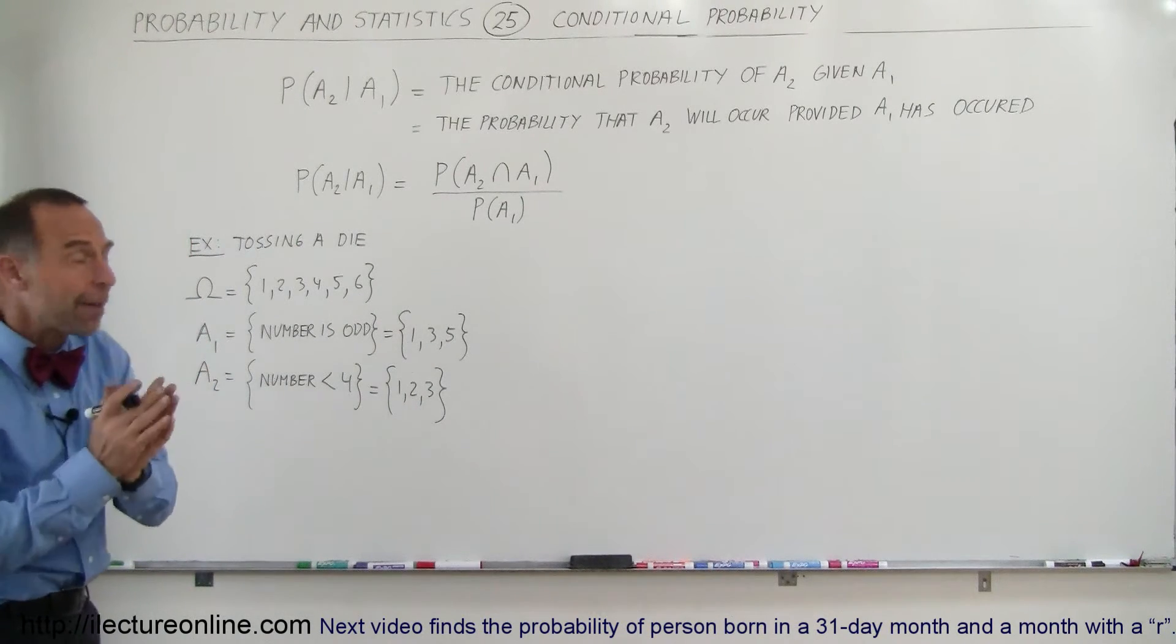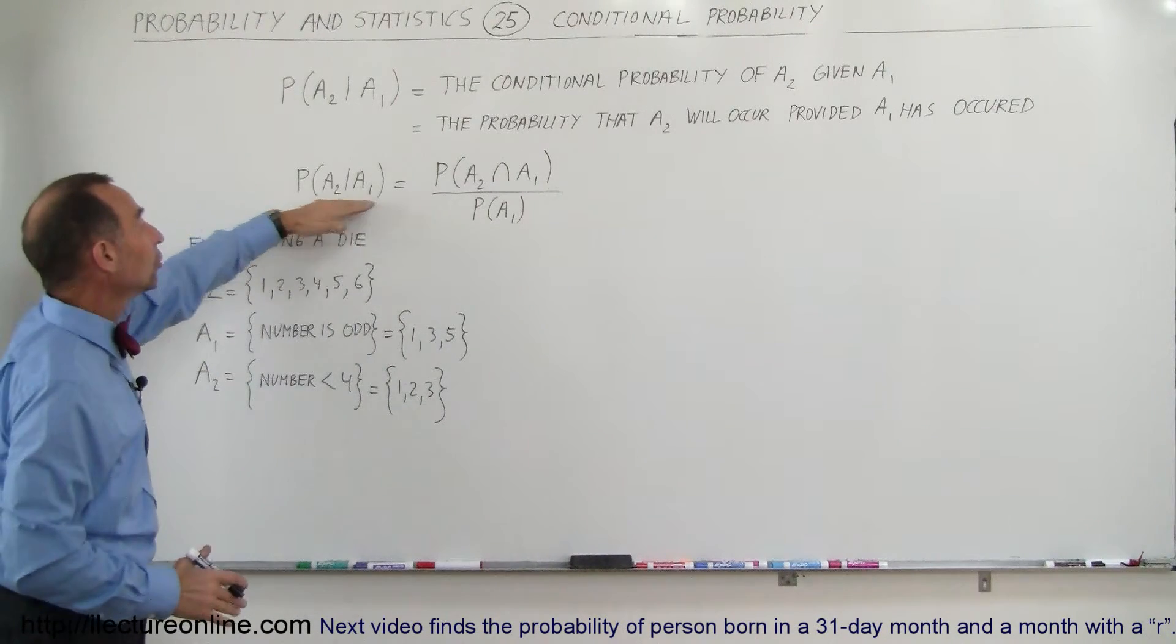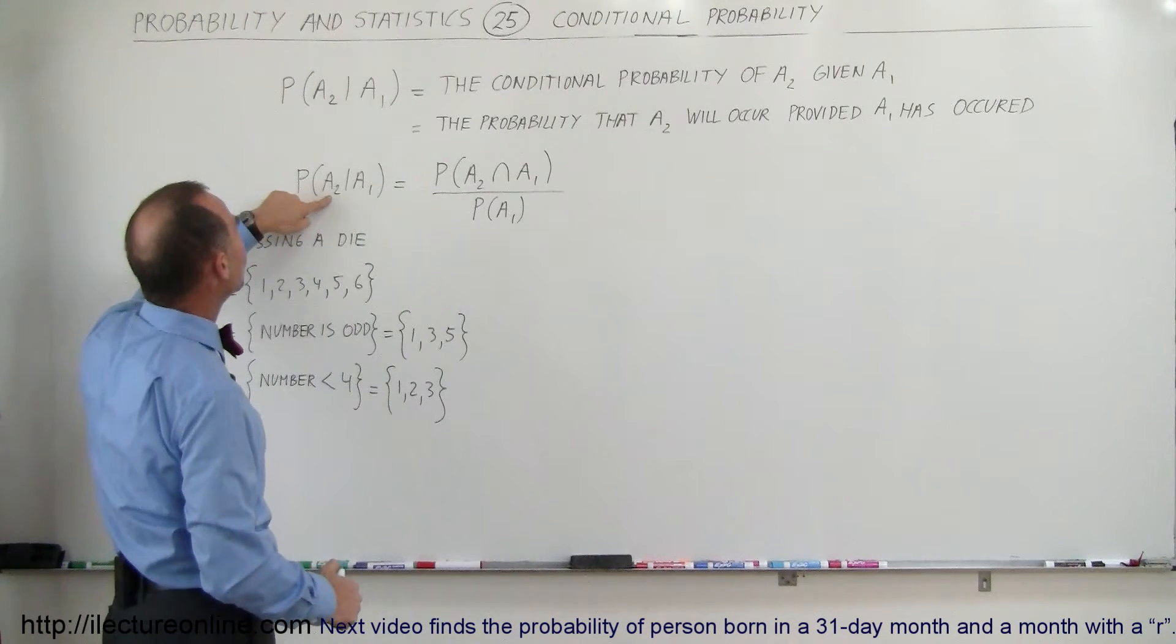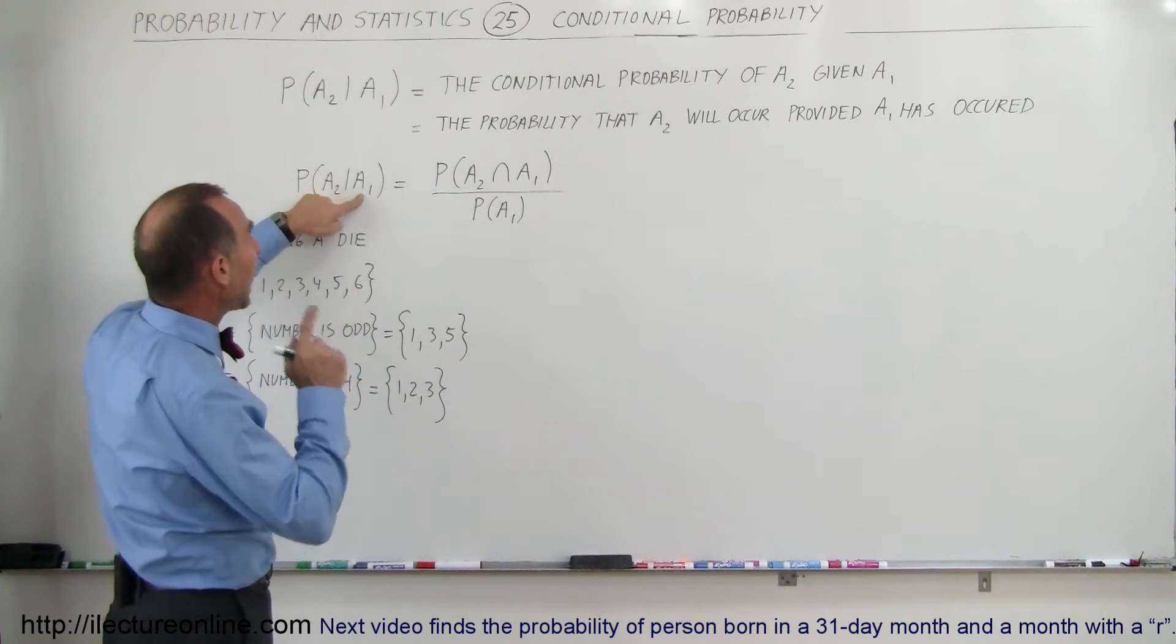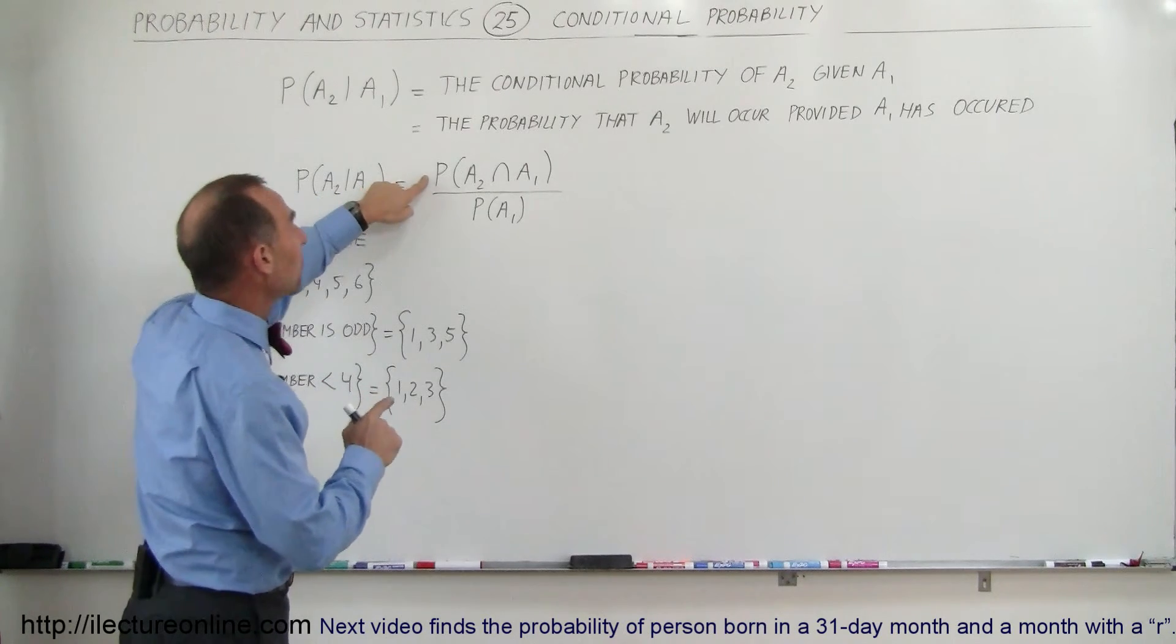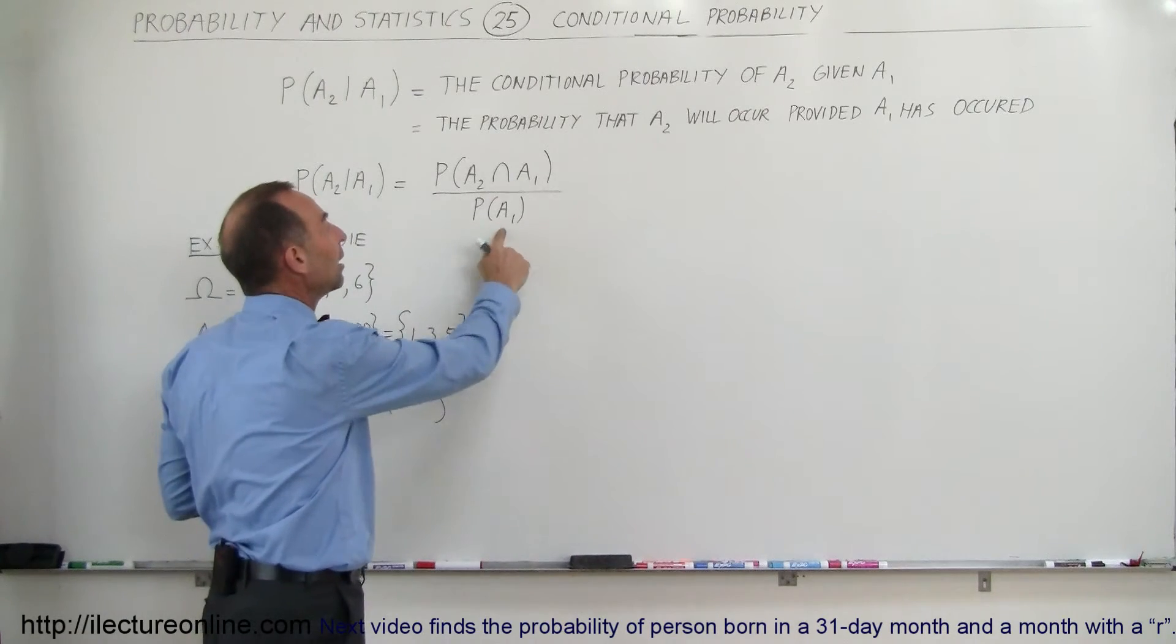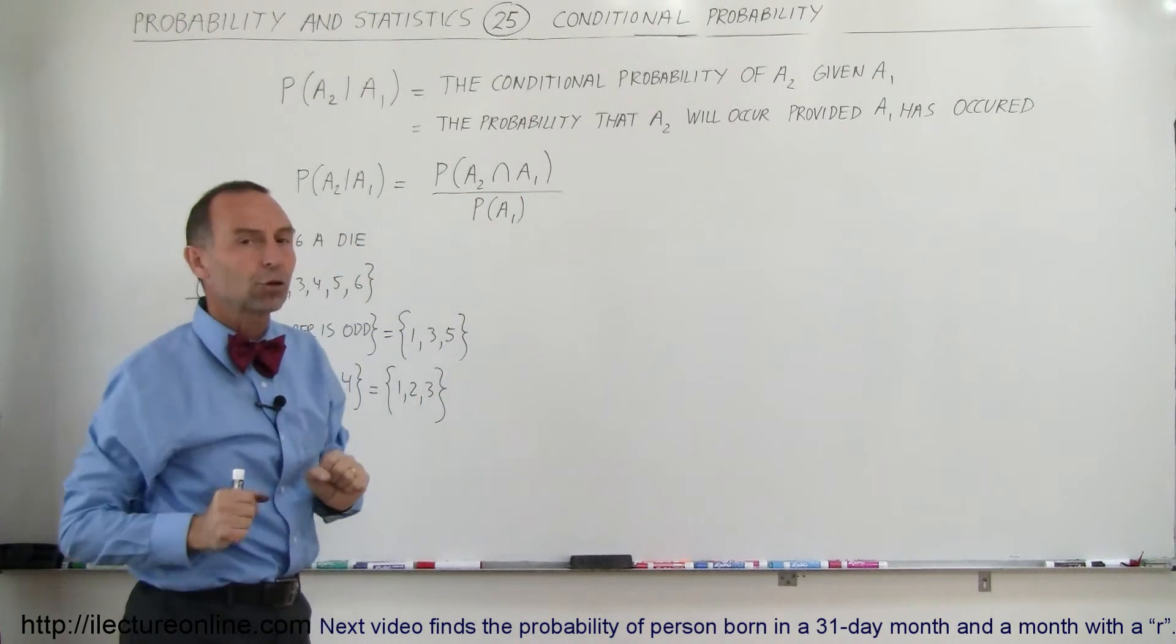What it means mathematically is that the probability that A2 will occur provided that A1 has occurred is equal to the probability of the intersection of the two events divided by the probability of the first event that has occurred.